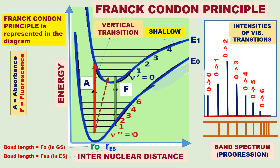During electronic transition, it is accompanied by vibrational transitions and rotational transitions. Here, we have not shown the rotational levels for simplification. So these are the nu double prime, the vibrational quantum numbers for the ground electronic state.